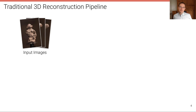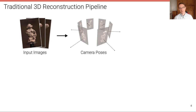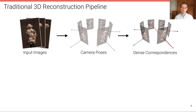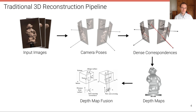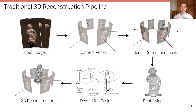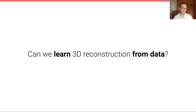This is a traditional 3D reconstruction pipeline, where the input is a set of images. We infer the camera poses using bundle adjustment, establish dense correspondences via stereo or multi-view stereo resulting in depth maps, and fuse these depth maps into a coherent global 3D reconstruction. Despite some parts utilizing learning, we haven't used learning extensively, and in particular haven't answered whether it's possible to go directly from one or multiple images to a complete 3D reconstruction. Can we learn 3D reconstruction from data?